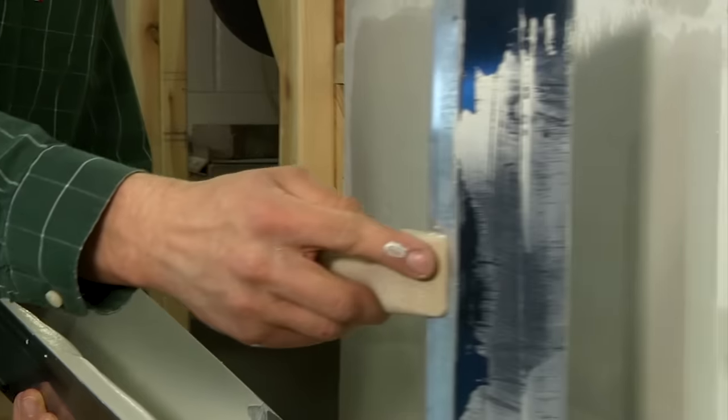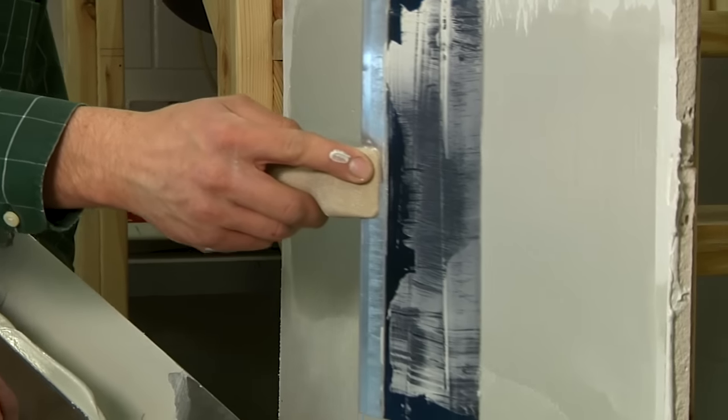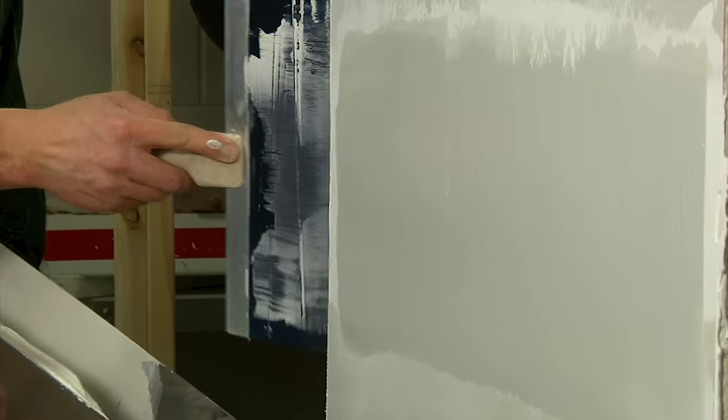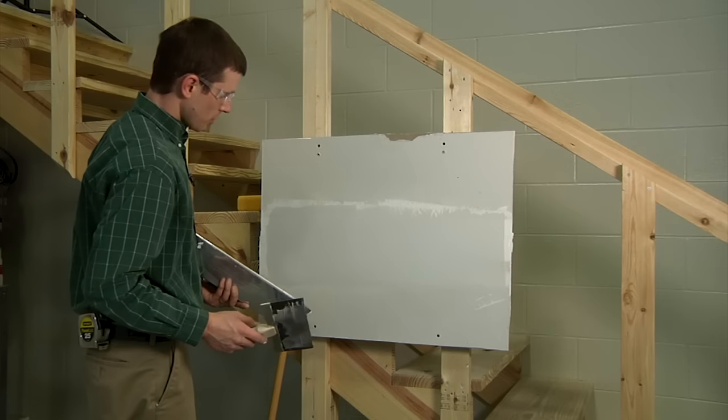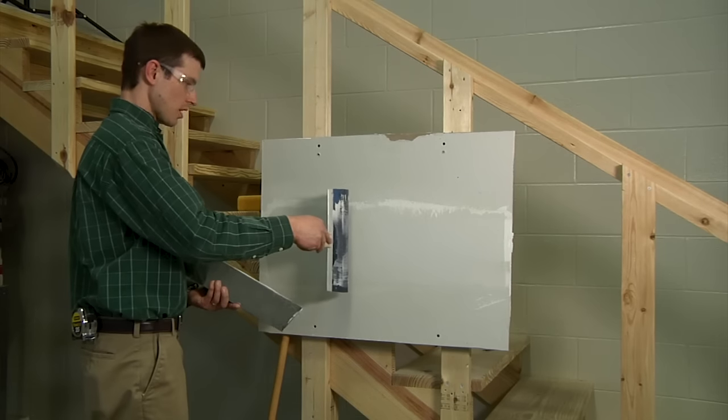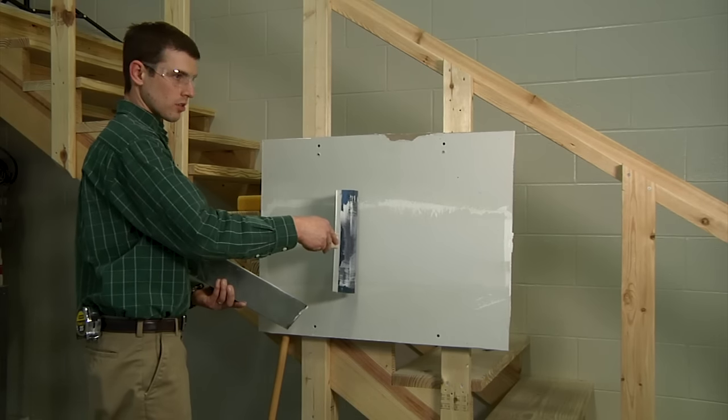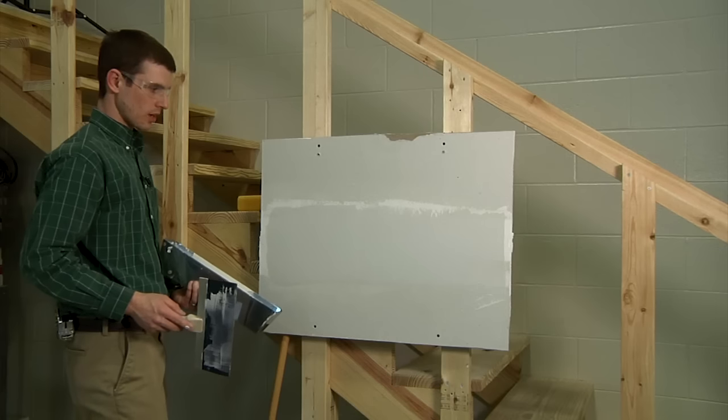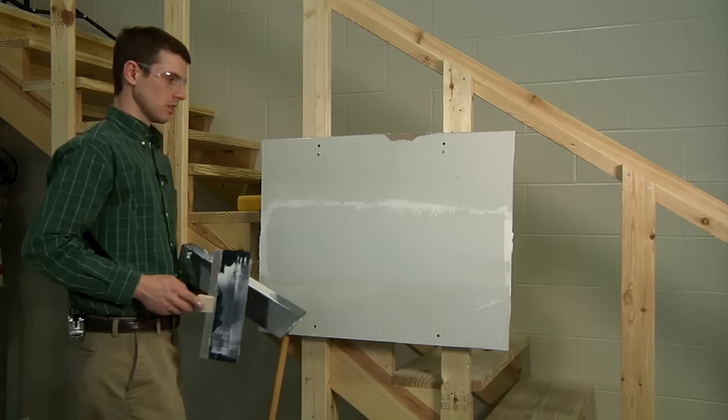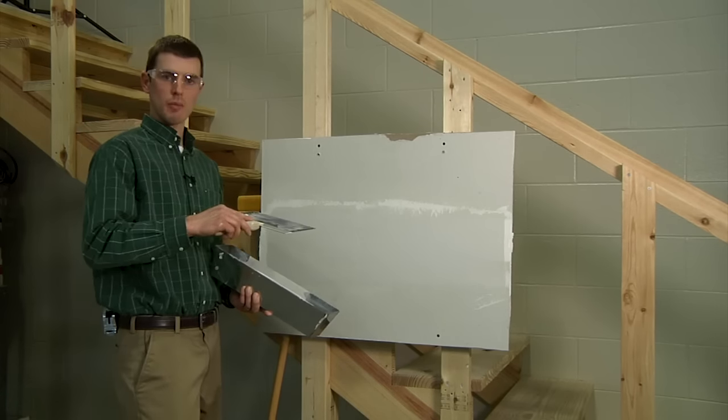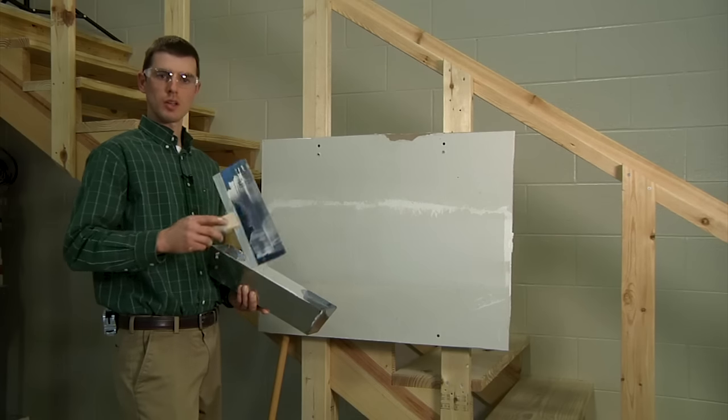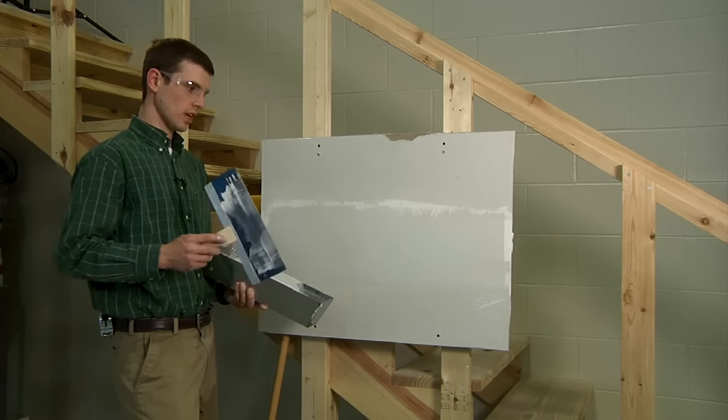One more time across the center of this joint to knock off any high spots. I'm fairly well satisfied. When we're done, we want to be around 10 to 12 inches in overall width, and we are about there. We'll allow this compound to dry overnight and come back in to wet or dry sand as we need to.